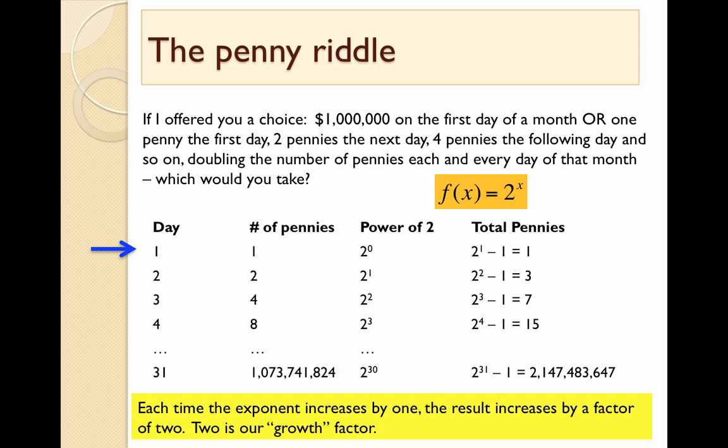On day one I would give you one penny, which is 2^0. The next day, two pennies, which is 2^1. Third day, four pennies, which is 2^2. Next day, 2^3, and so on. By the 31st day I'm giving you 2^30 pennies. That is a heck of a lot of pennies. At the end, if you add up all those pennies, that's over two billion pennies.